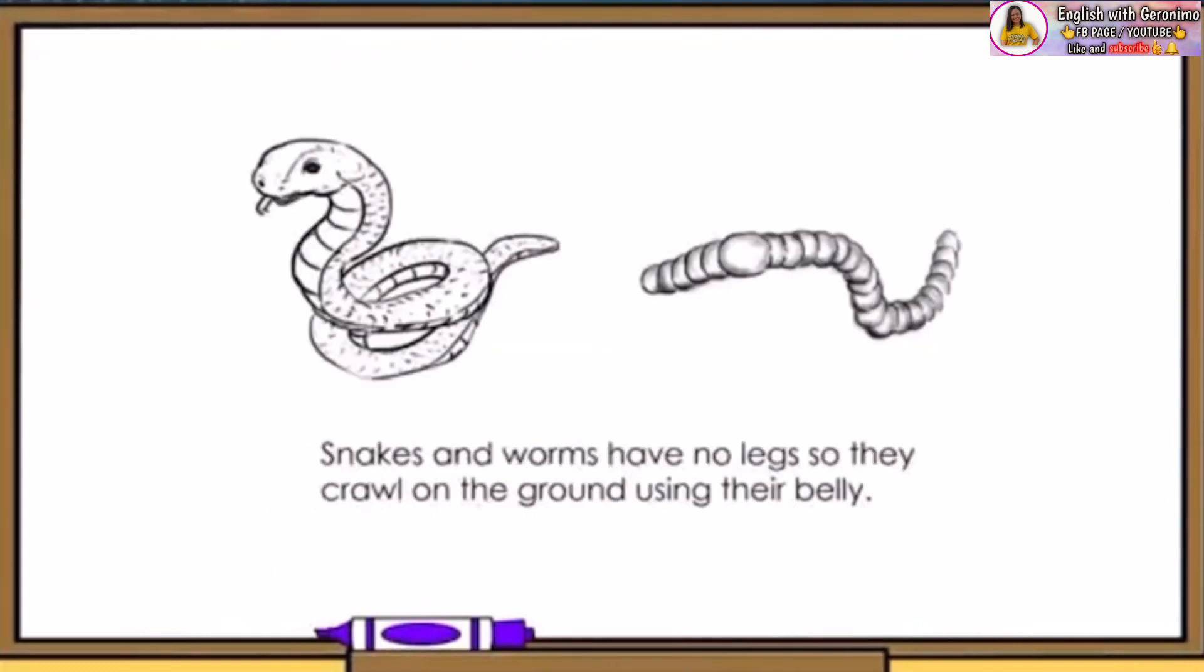How about a snake? How can it move its body when it doesn't have legs? Animals like snakes and worms have no legs, so they crawl on the ground using their belly.